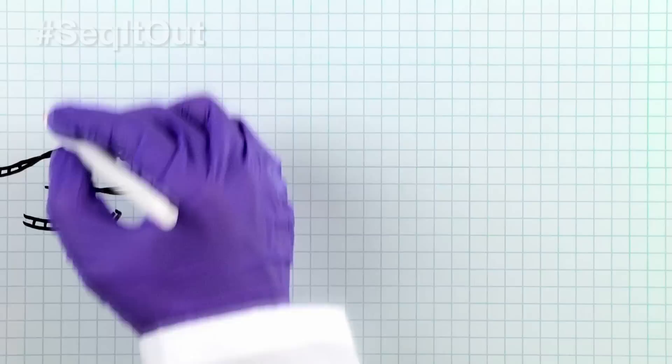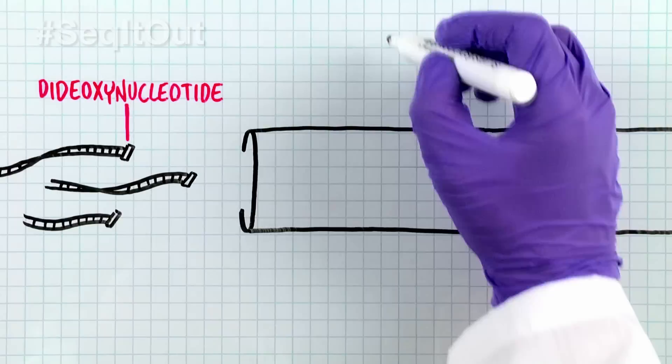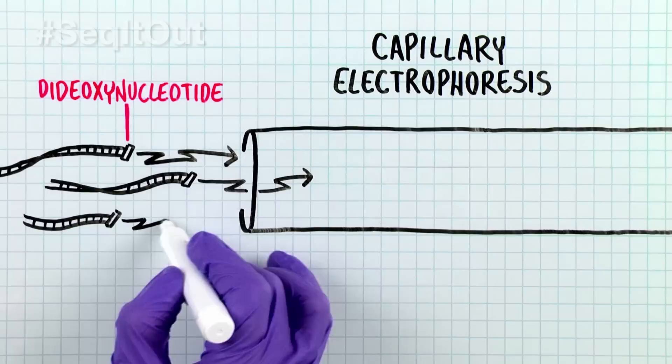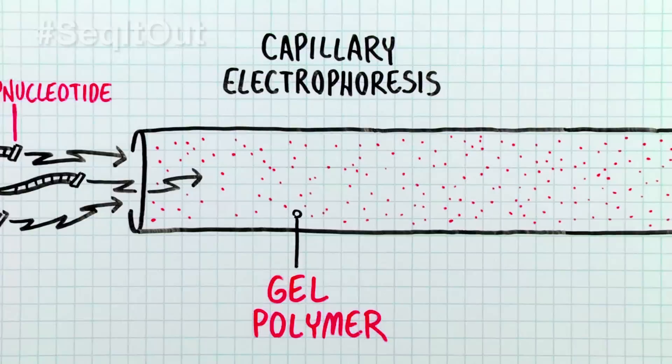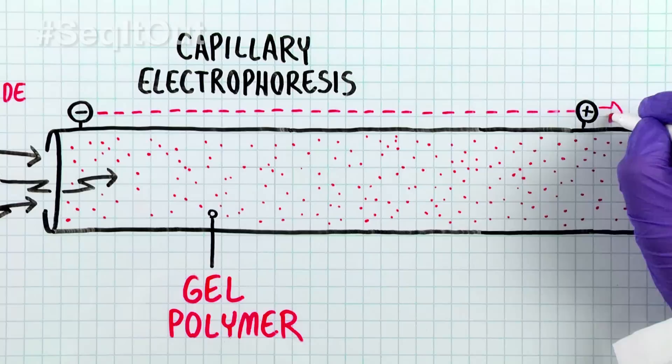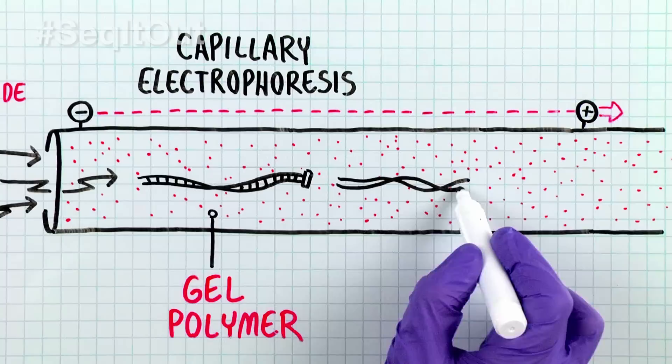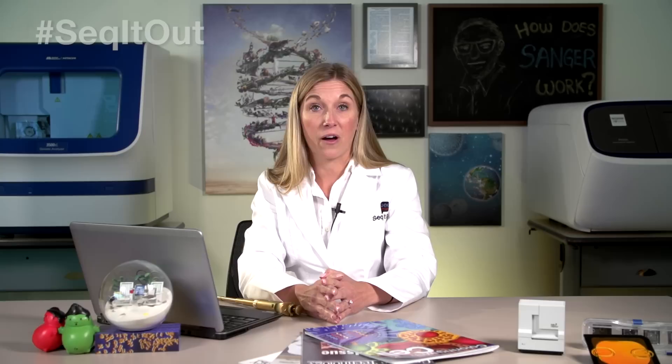Sanger sequencing results in the formation of extension products of various lengths, terminated with dideoxy nucleotides at the three prime end. The extension products are then separated by capillary electrophoresis, or CE. The molecules are injected by an electrical current into a long glass capillary filled with a gel polymer. An electrical field is applied so that the negatively charged DNA fragments move toward the positive electrode. The speed at which the DNA fragment migrates through the medium is inversely proportional to its molecular weight, and this process can separate the extension products by size at a resolution of one base.